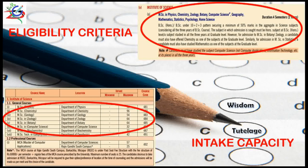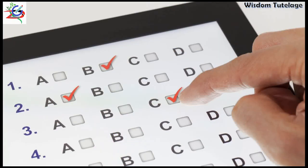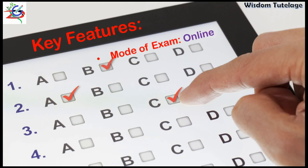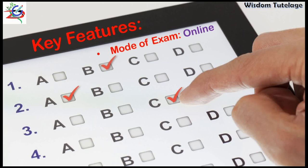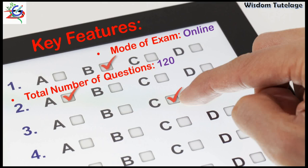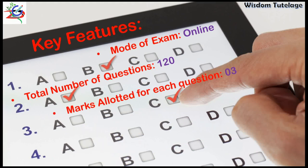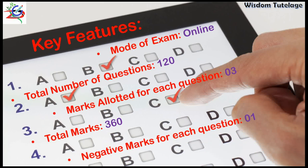Now the basic features for the online exam: all PG exams are in online mode. The total number of questions is 120, and marks allotted for each question is 3. Therefore, the total marks of the online entrance exam are 120 × 3 = 360.